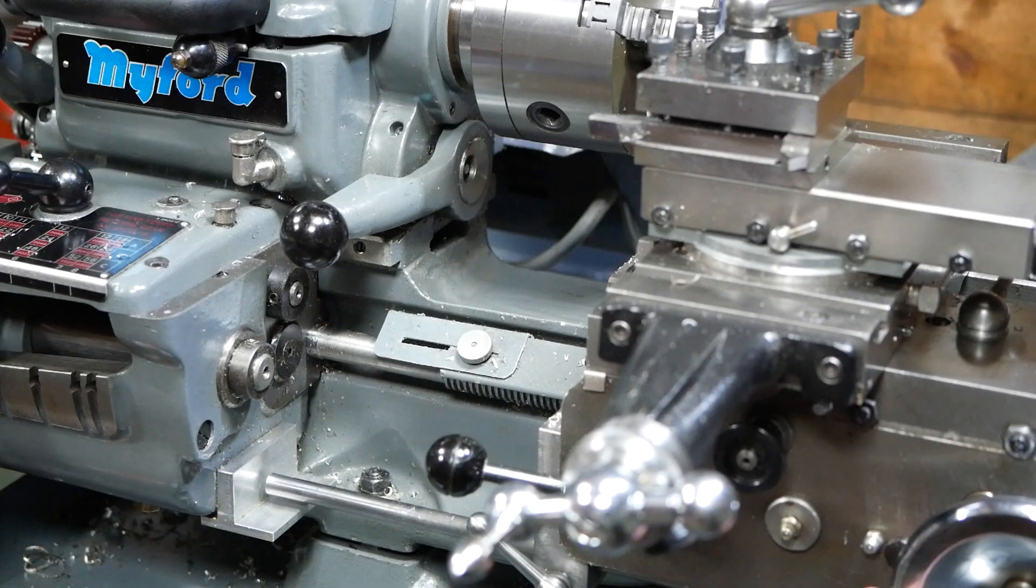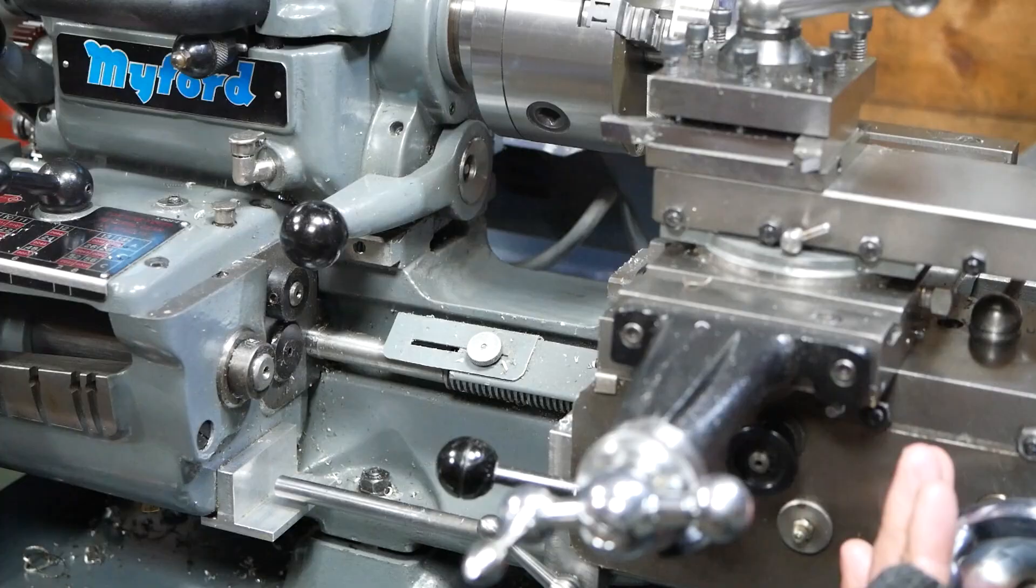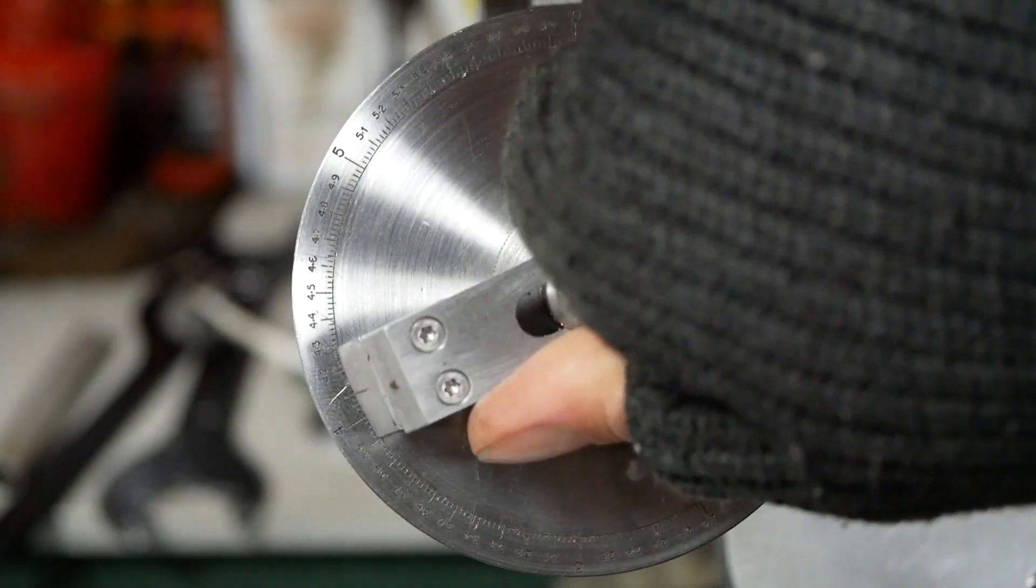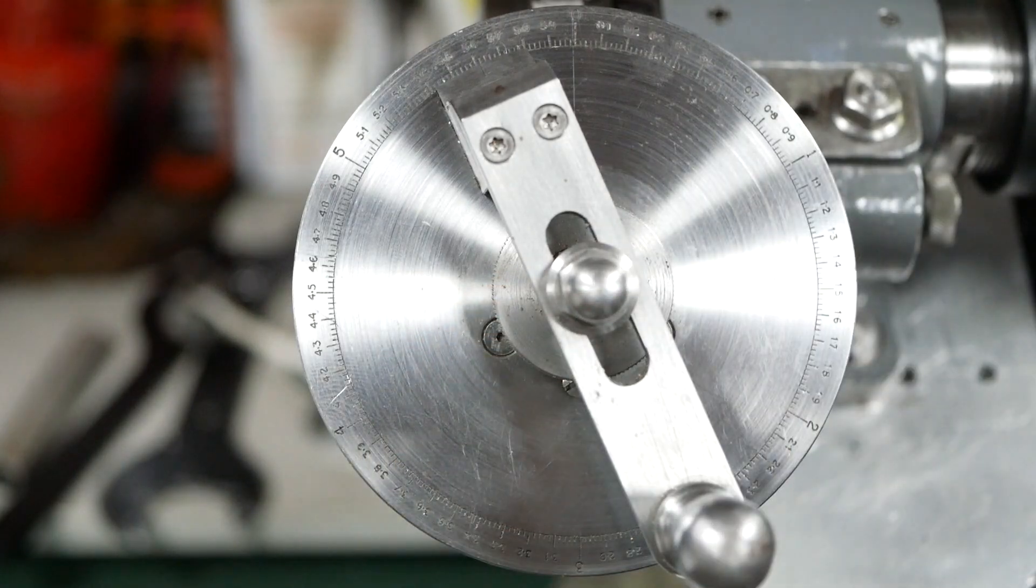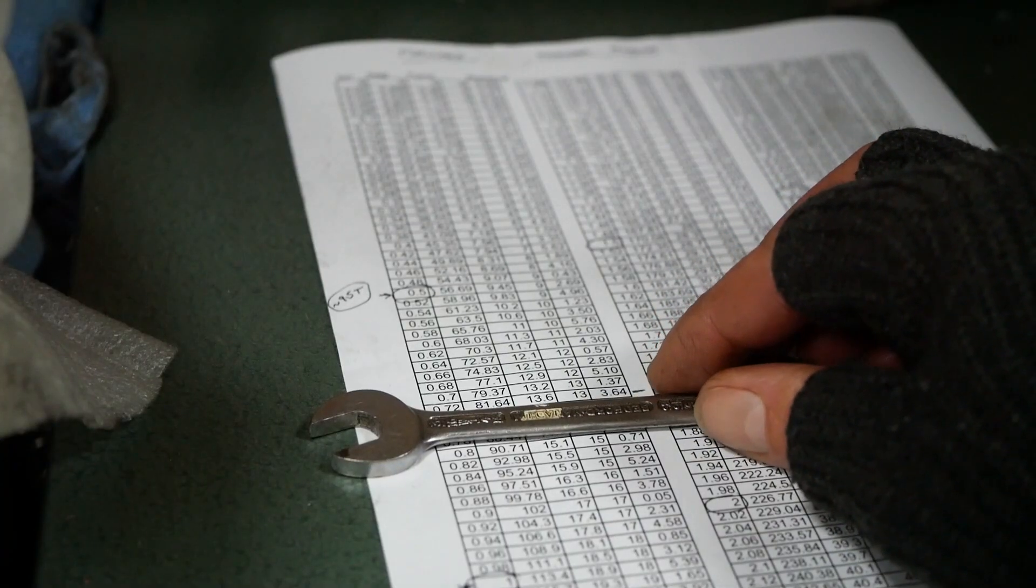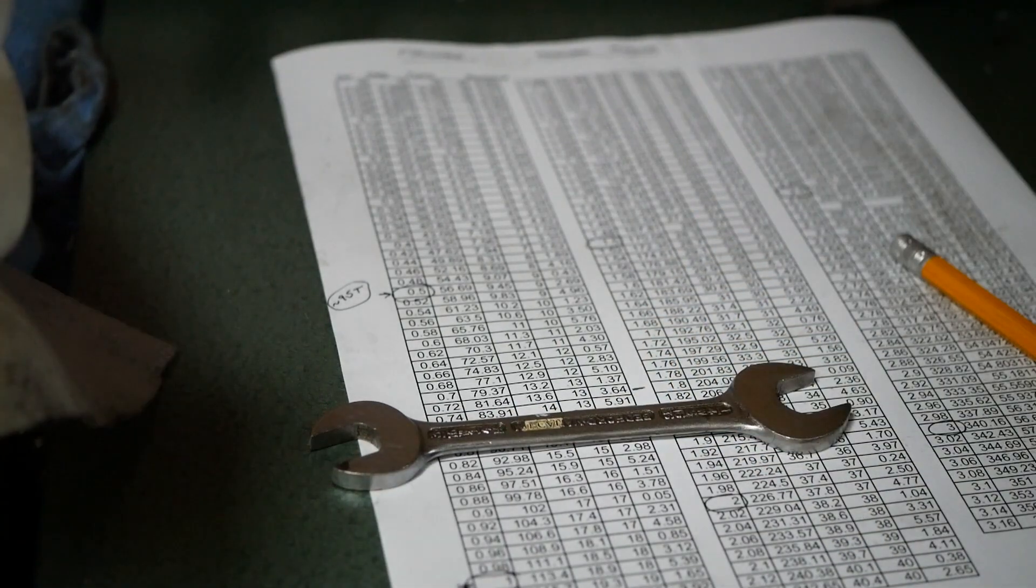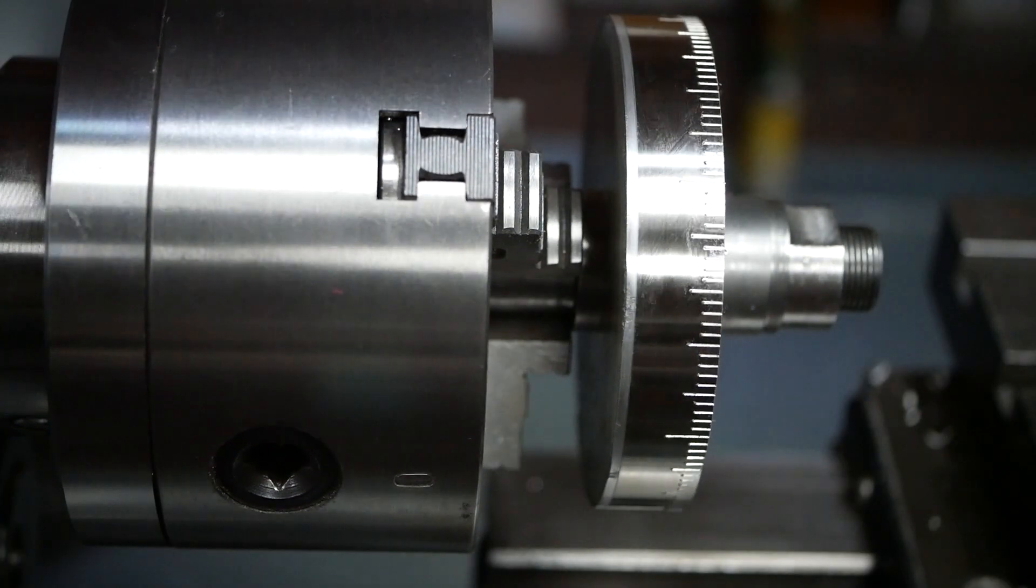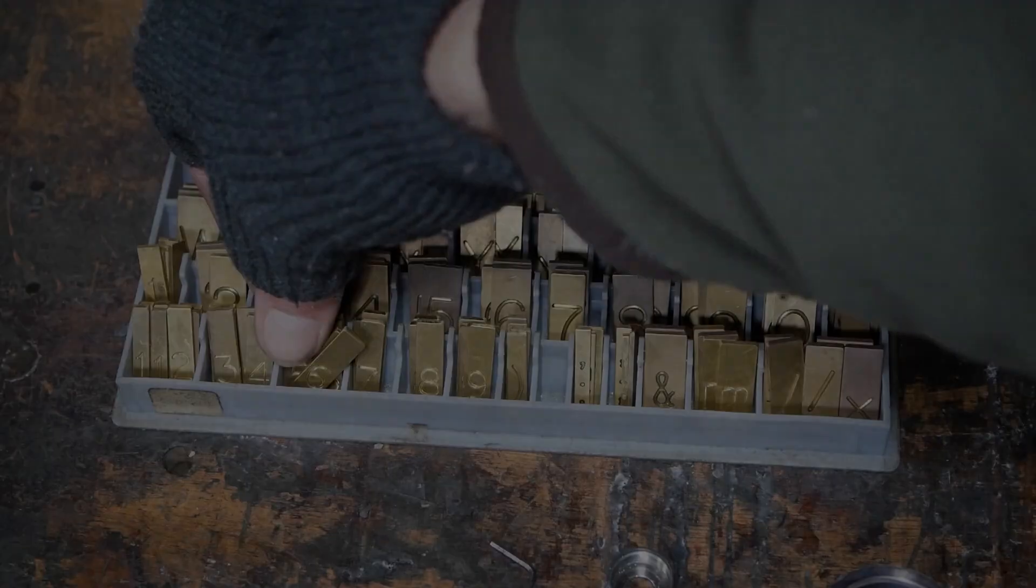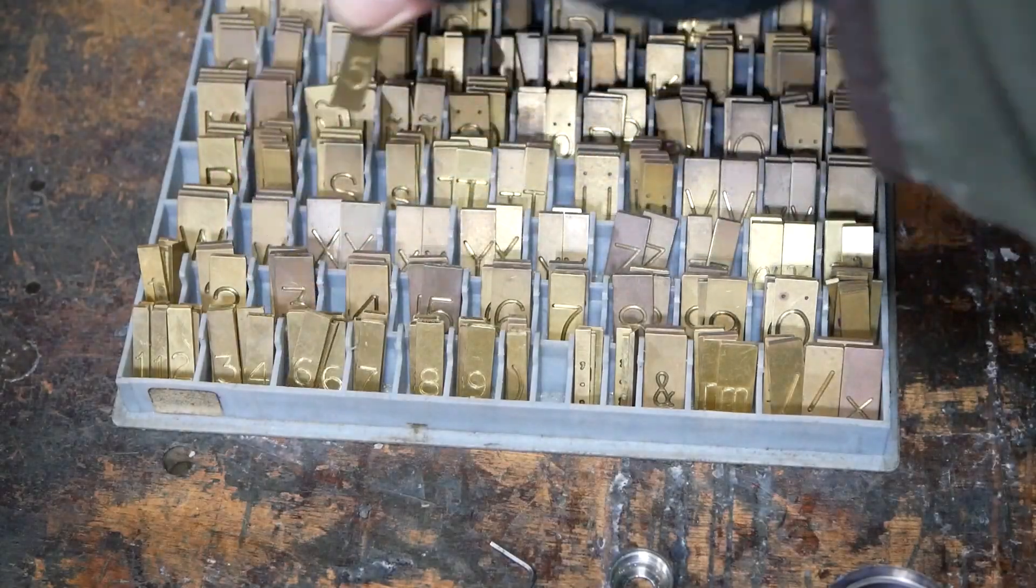The dial graduations are marked with a V-tool mounted on its side in the toolpost. After each mark is made, the spindle is indexed to the next position, which was pre-calculated and printed off as a table. To minimise the risk of a mess up, it's a good idea to start with the long graduations, then move to the medium ones and finish with the short ones, rather than engraving each graduation sequentially.